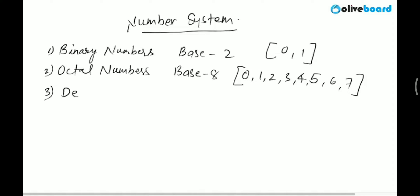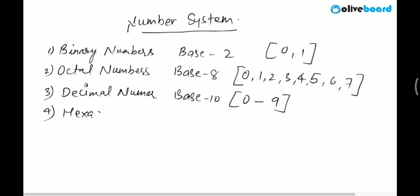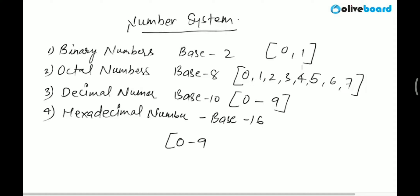After octal, we have the decimal number system. In decimal, we have base ten and ten different symbols that go from zero to nine: zero, one, two, three, four, five, six, seven, eight, nine. And further, hexadecimal numbers. Hexadecimal numbers have base 16, and they have both numbers and characters associated with them. In numbers, we use zero to nine, and after that we use characters like A, B, C, D, E, and F.